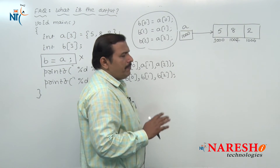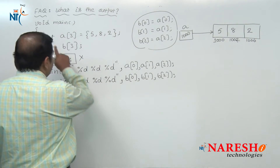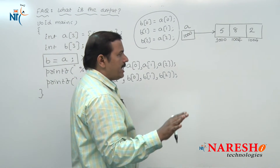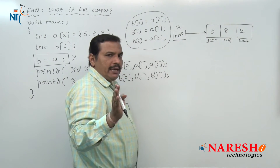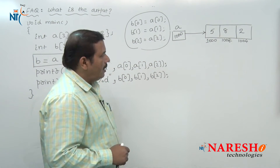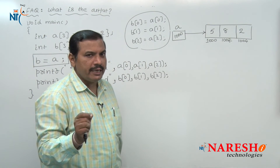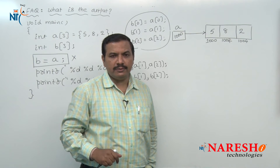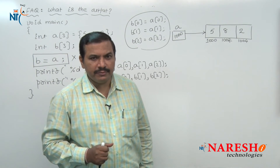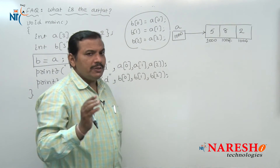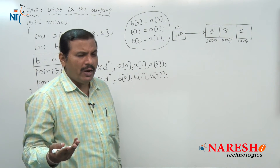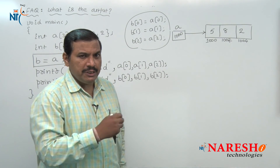This is the memory representation of a one-dimensional array. When the array initialization statement is executed, a block of memory is allocated and the first byte address of this memory block is automatically stored inside array name A. As array A is holding address 1000, we can say array A is also a pointer — a variable which is used to store the address of a memory location. Hence, array A is known as a pointer because it is storing an address.